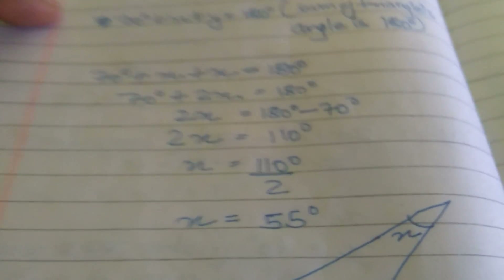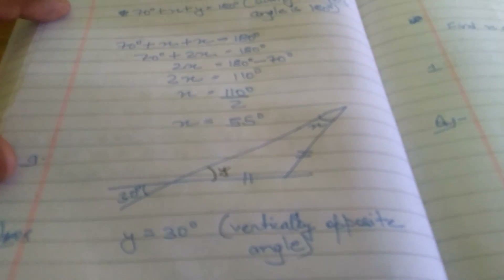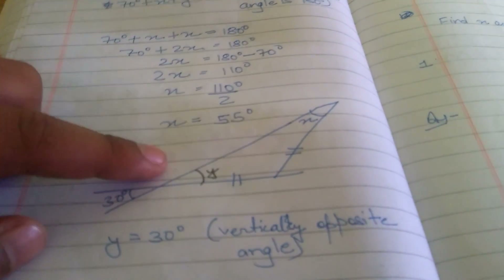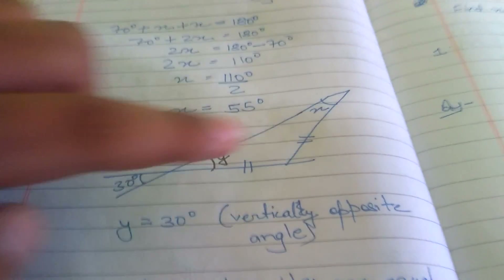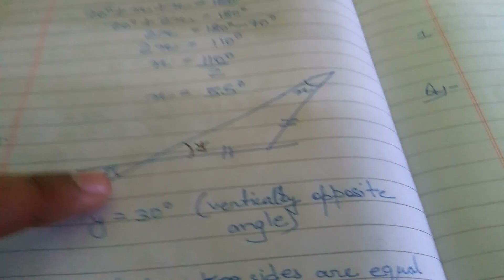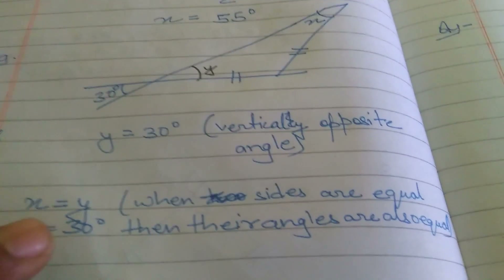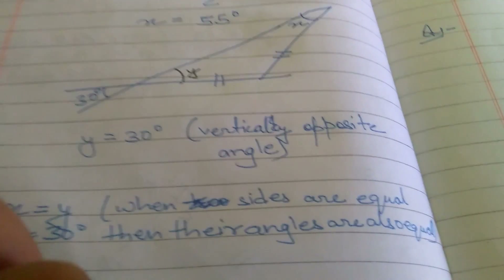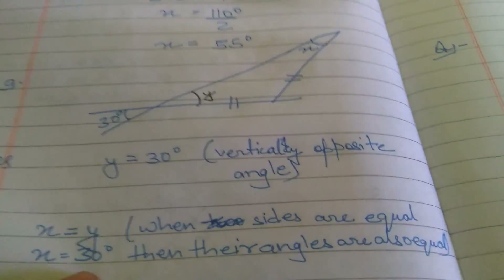This is question 9. This is 30, Y and X. Y is additional, and these two are equal. So Y equals 30 because of the vertical opposite angle property. X is equal to Y when sides are equal, so X equals 30 degrees.